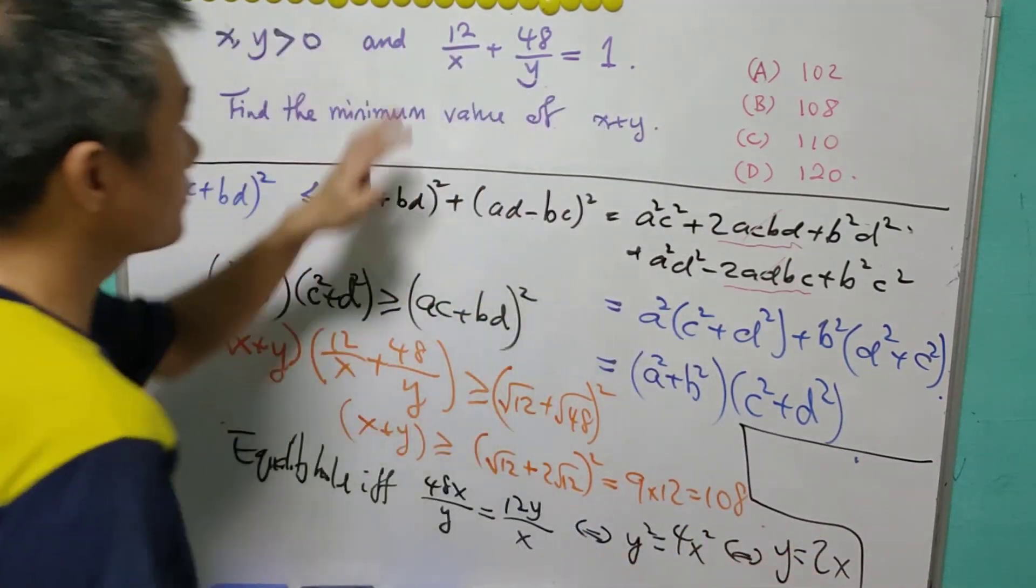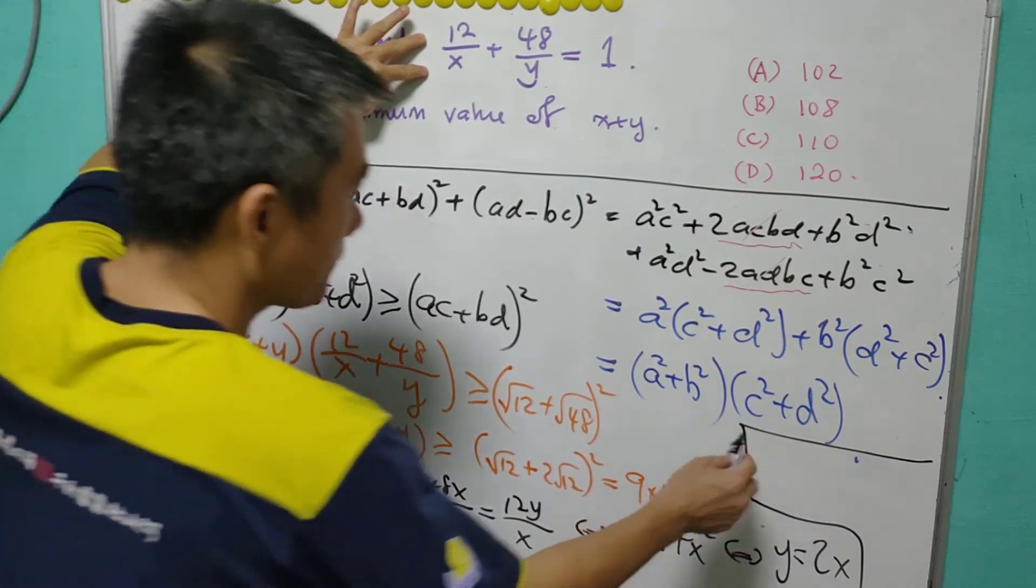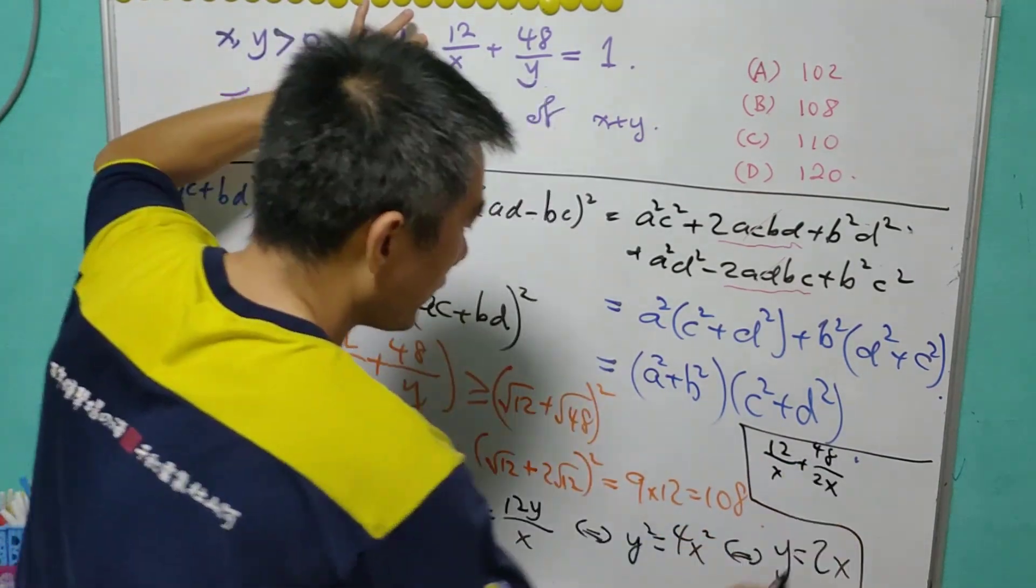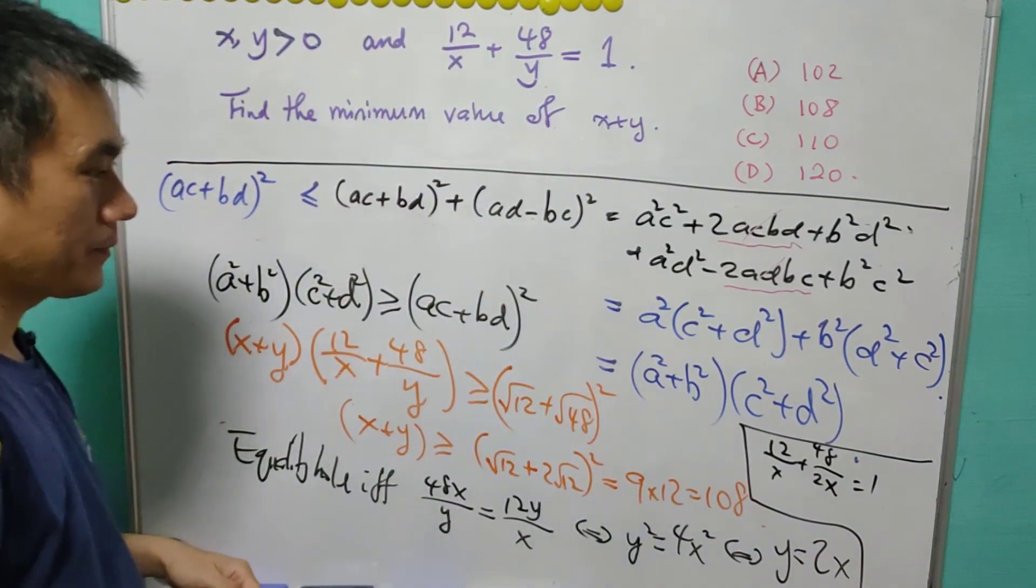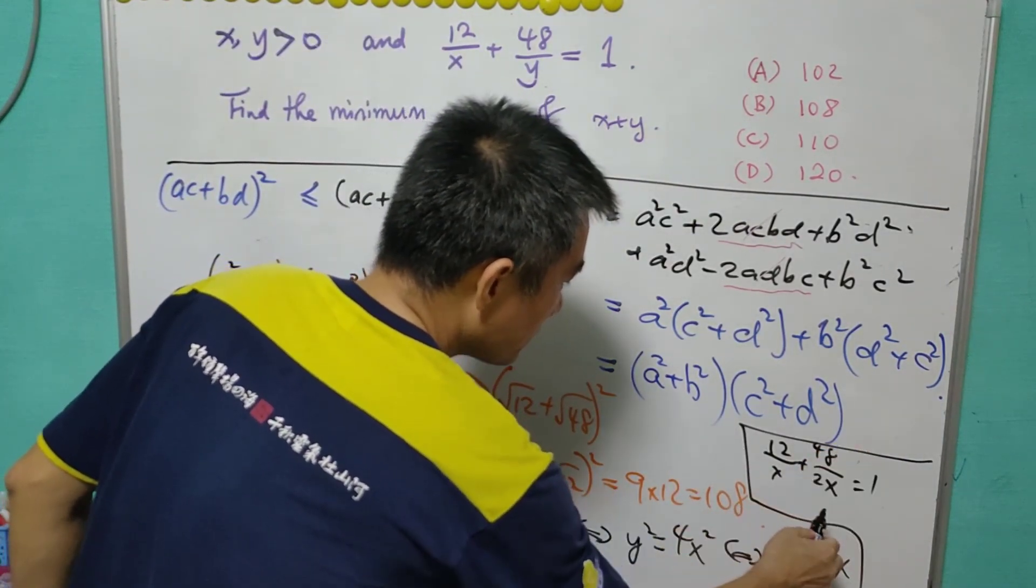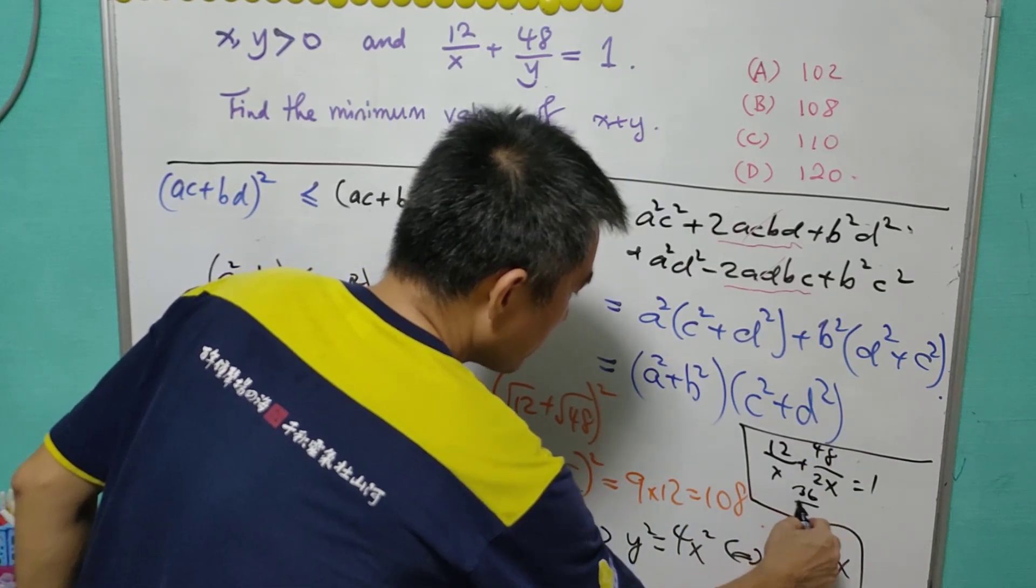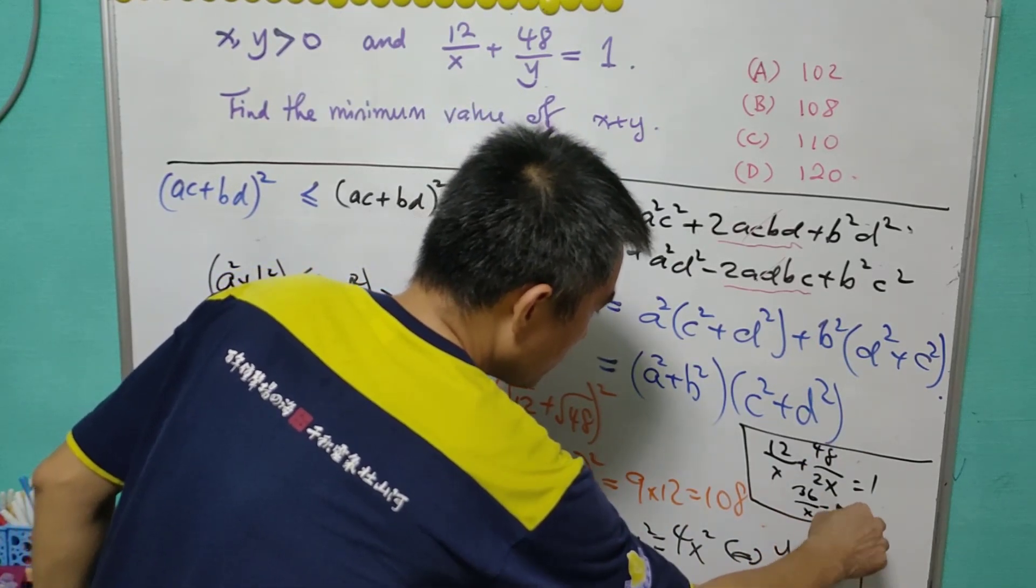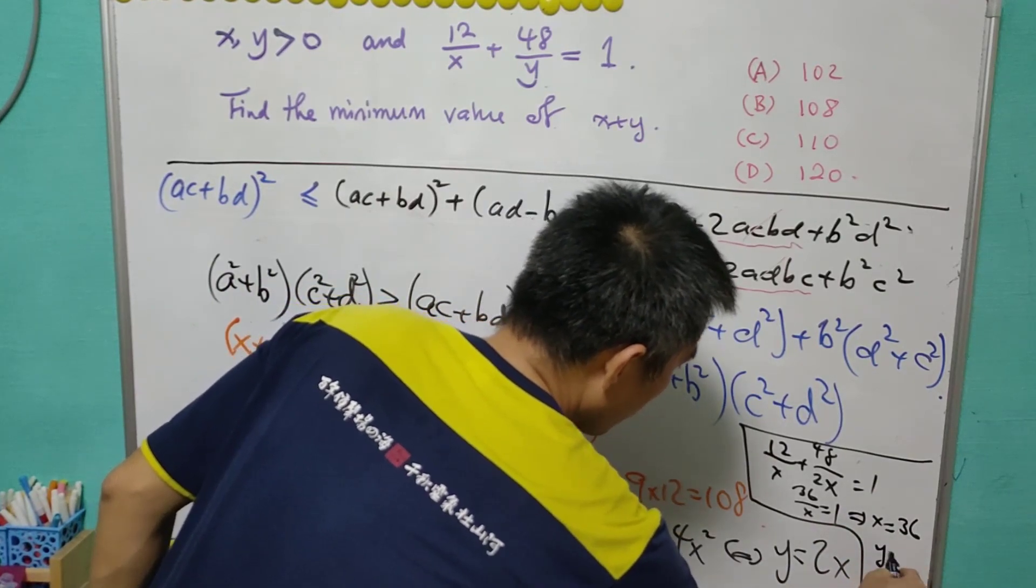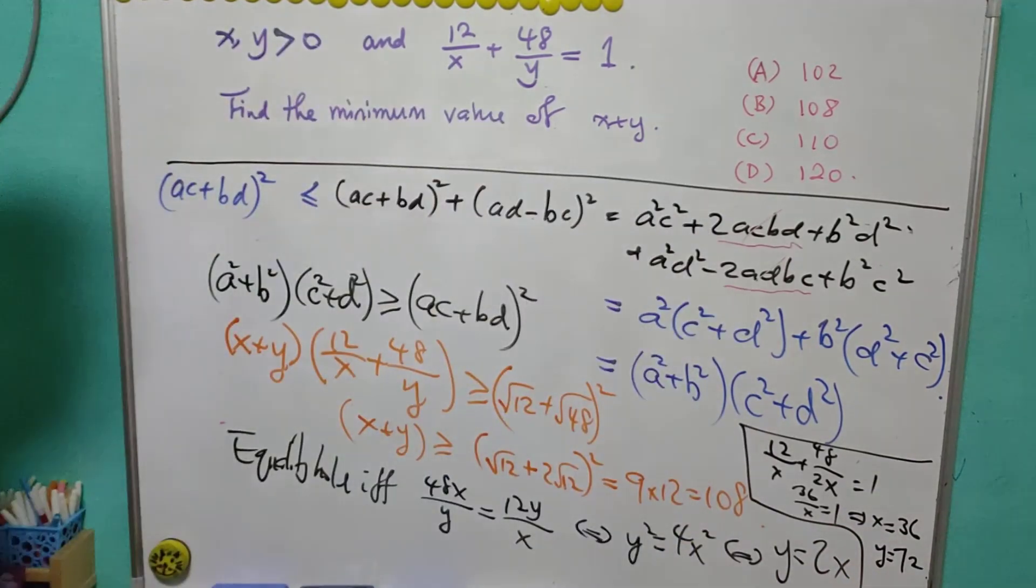We can use this condition to get the answer for x and y. 12/x + 48/(2x) = 1. After we cancel it, this is 24. So 36/x = 1 means that x = 36 and y equals double of it, which is 72.